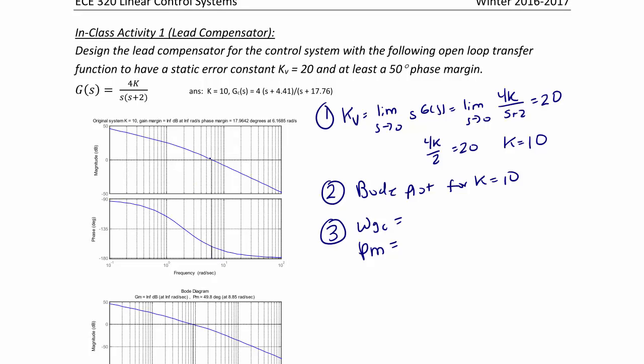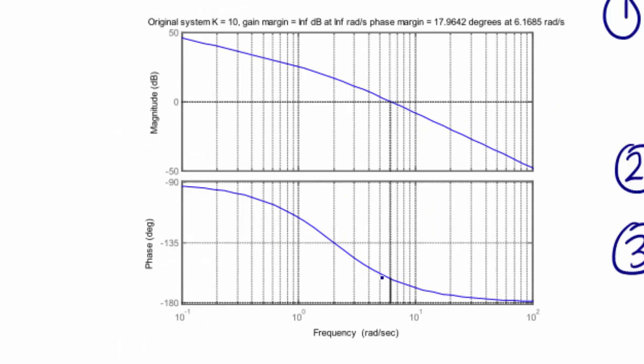The gain crossover frequency is right around 6 radians per second. You can also get that from MATLAB. The phase margin at that point is 18 degrees. So here we have the 18 degrees and here we have the 6 radians per second.